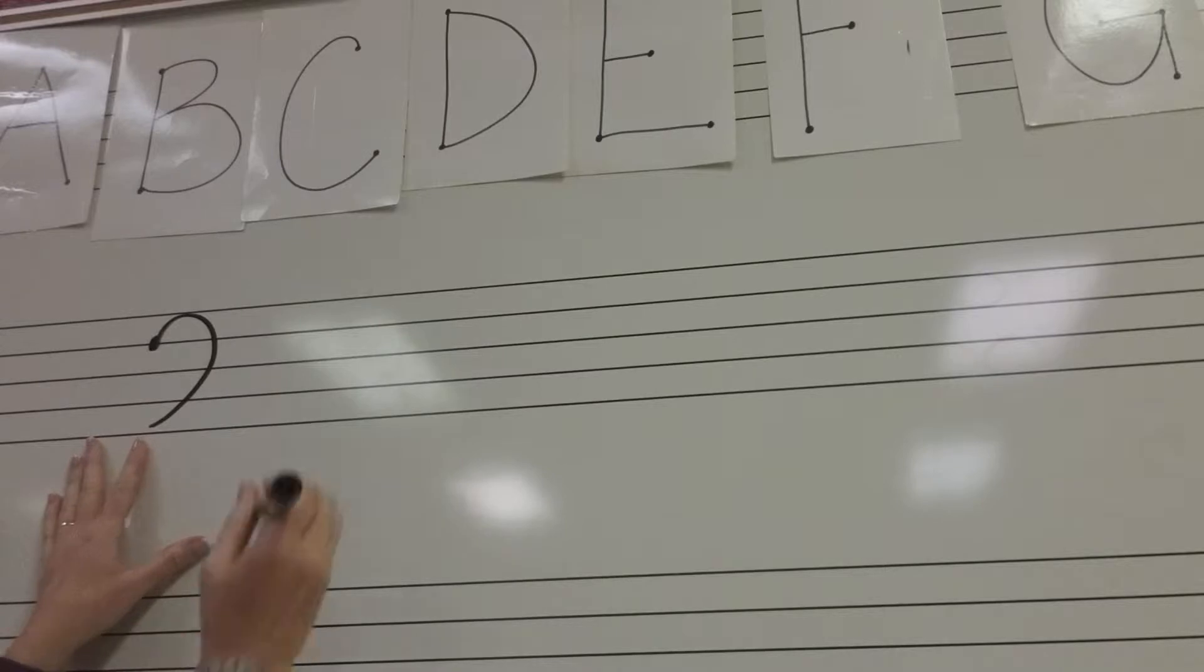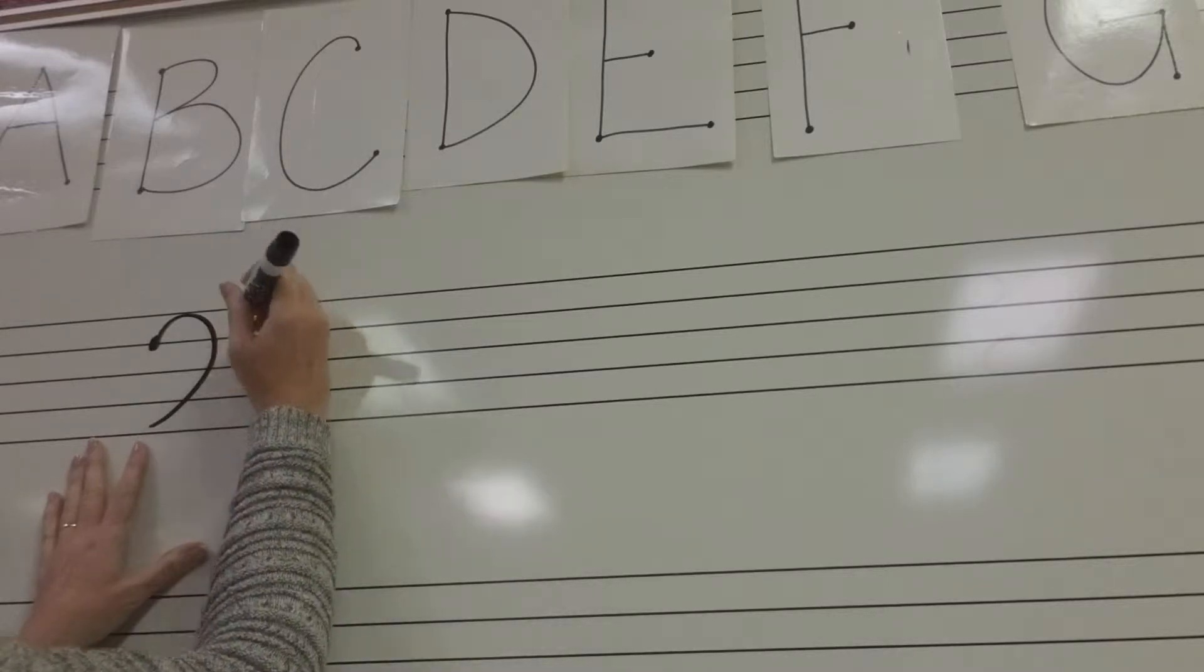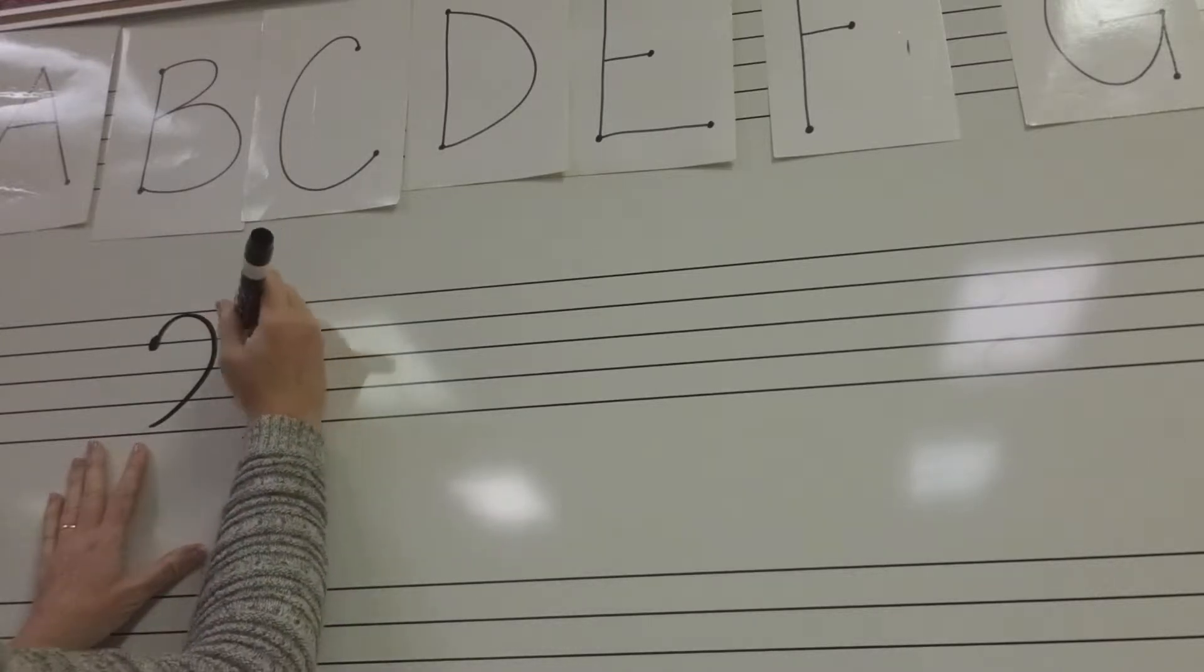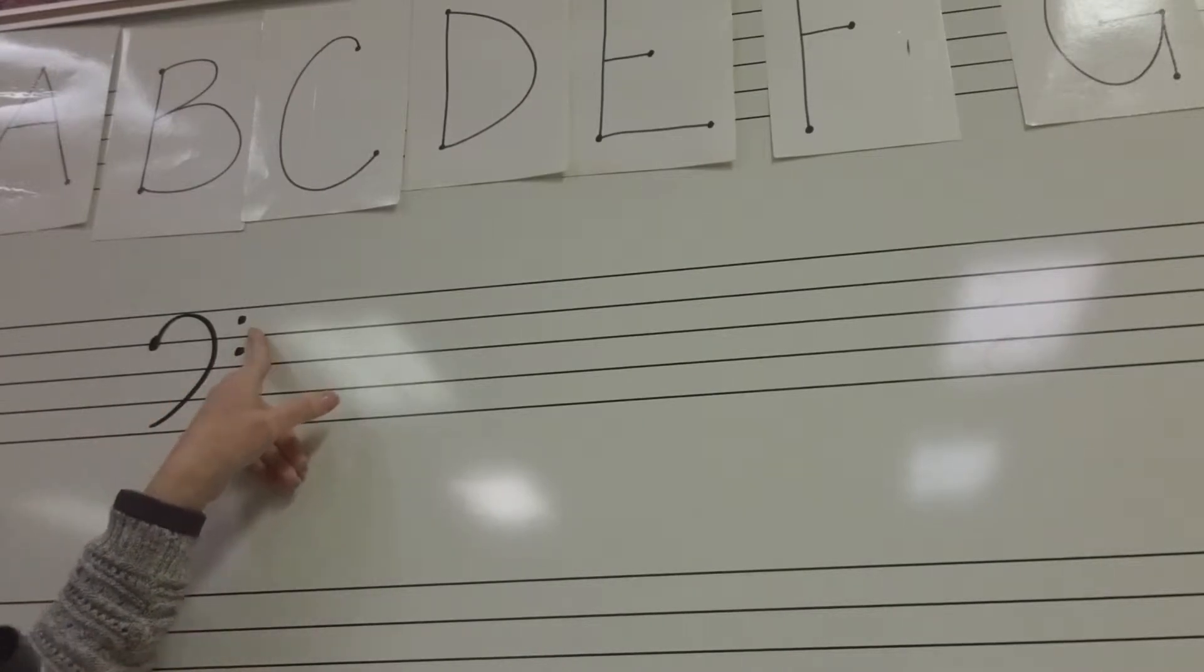I think it kind of looks like an ear. And then we're going to put a dot on either side of the fourth line. And that designates that line as the F line. Bass clef is your F clef.